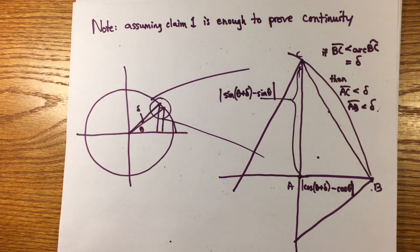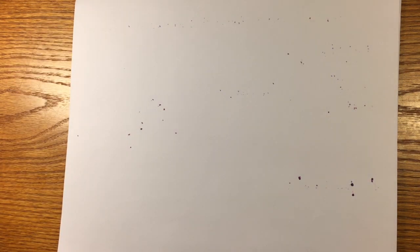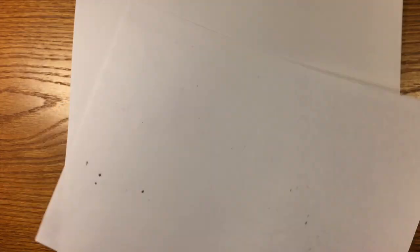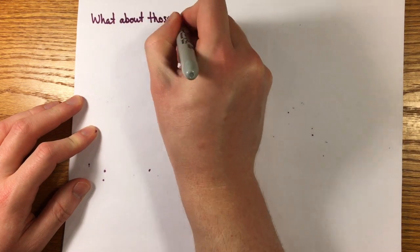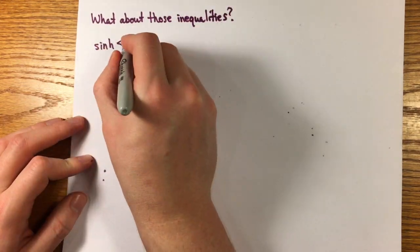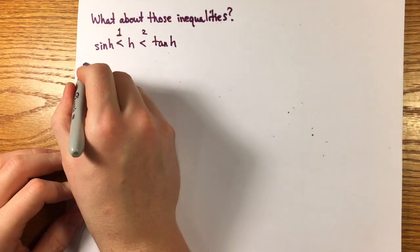So what about those key inequalities that told us sine h is less than h is less than tangent h? They're complicated to prove because they involve comparing straight segments to curved ones on a circle, but that's the whole point of the trig functions.